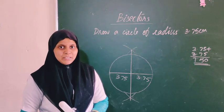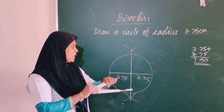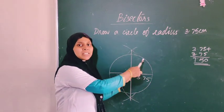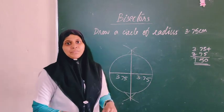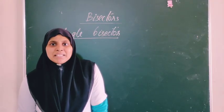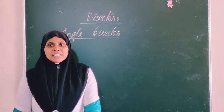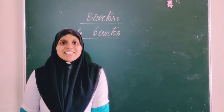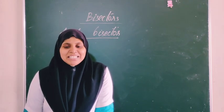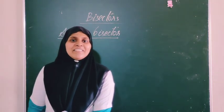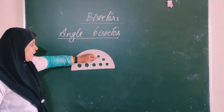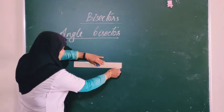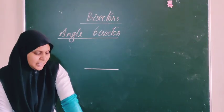We can also draw the angle bisector. Now we will do the angle bisector. First, we draw an angle of 60 degrees. One line is at 60 degrees, then we join it to form the angle.